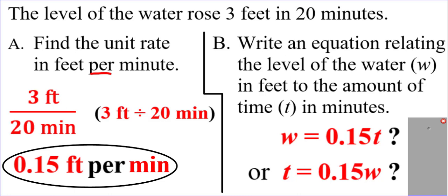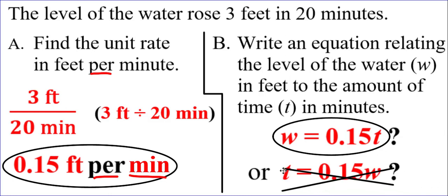Go back to your units of measure in your unit rate. It's per minute, which means times the minutes. Which equation has the 0.15 times the minutes? It's the first one: 0.15 times t. Remember, that's our time in minutes. So that's the correct order. Since the unit rate was per minute, it's got to be times the minutes. And that makes the equation that we have circled.